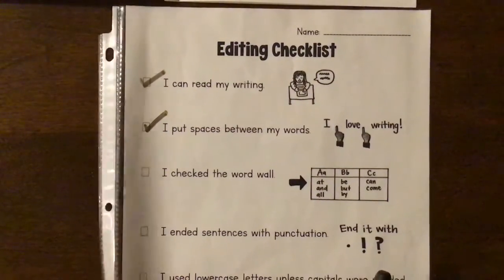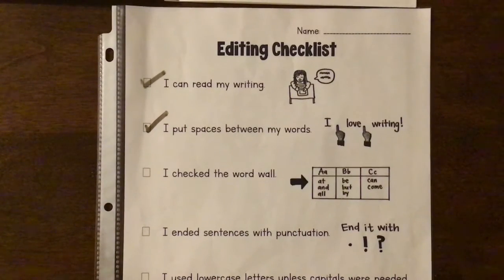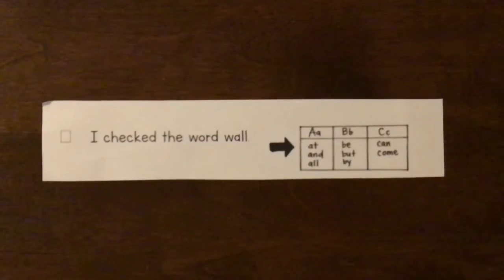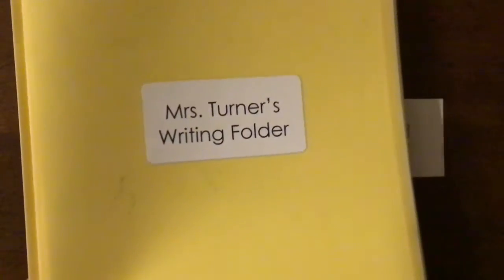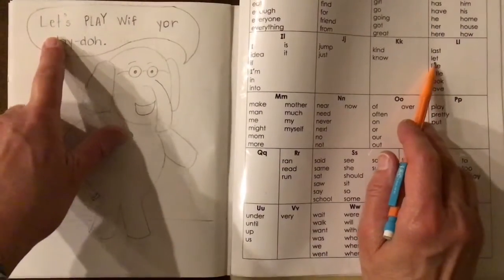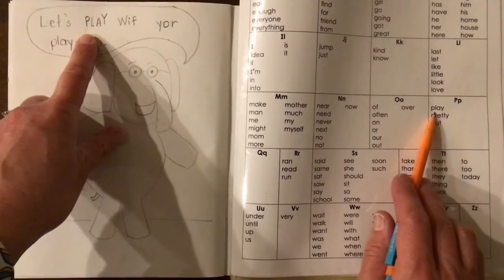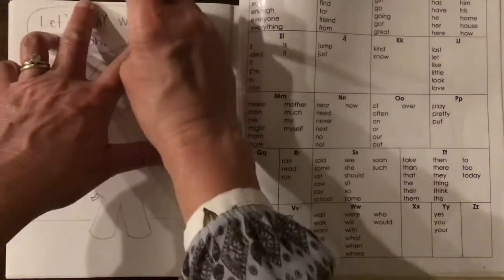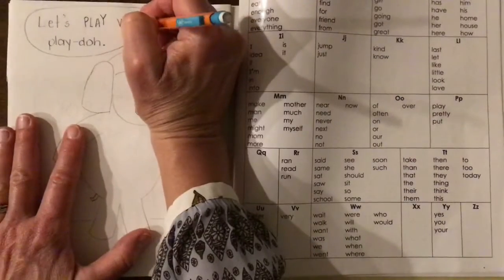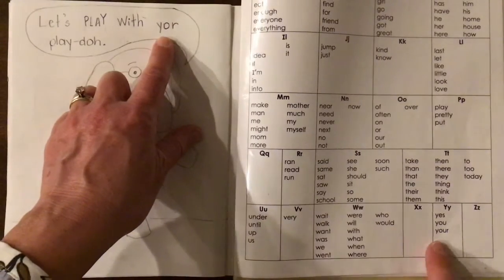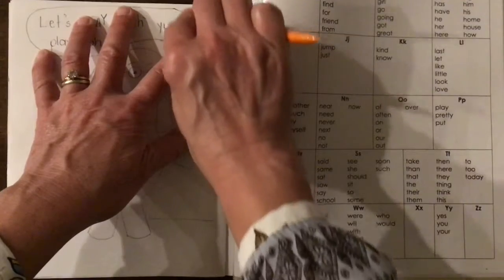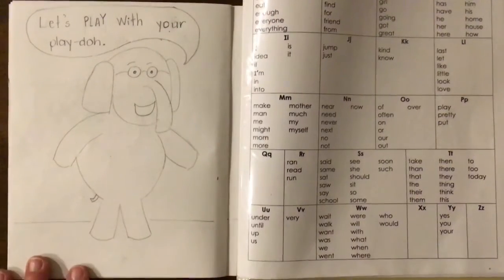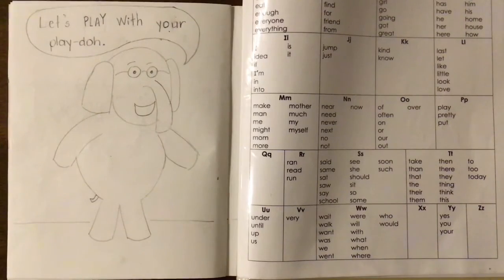Now I'm ready to work on the third important skill: checking the word wall to make sure my snap words are spelled correctly. When I check the word wall, it's important to have my yellow writing folder — inside is a word wall. I'm checking the word 'let's' — yep, that's spelled correctly. 'Play' is another snap word — looks good. 'With' — oh dear, I need to fix that. 'With' doesn't have an F at the end; it has a digraph, T-H. Now let's check the word 'your' — oops, I forgot a U. I'm going to edit the word 'your' so it is spelled correctly. I checked the page to make sure my snap words were spelled correctly.